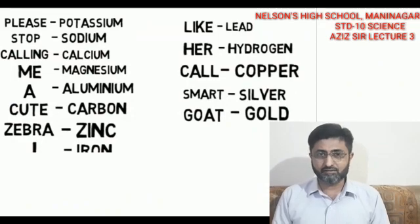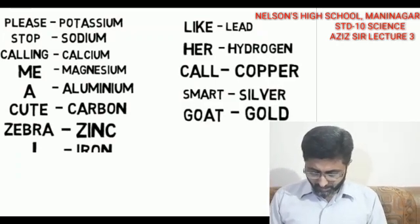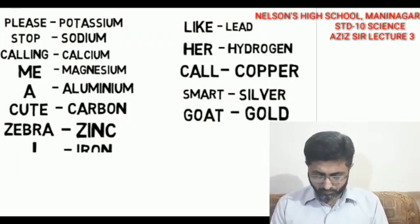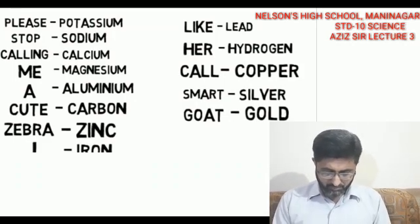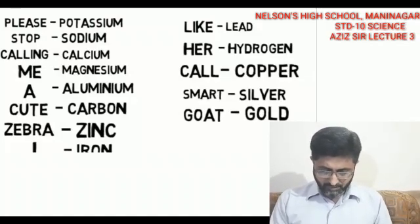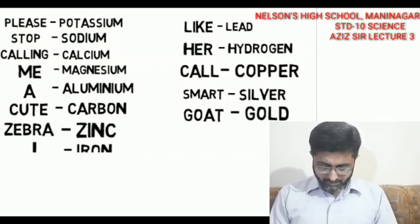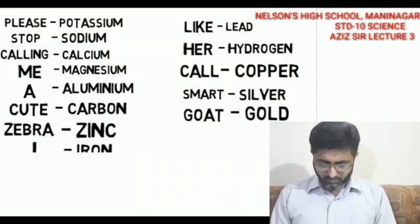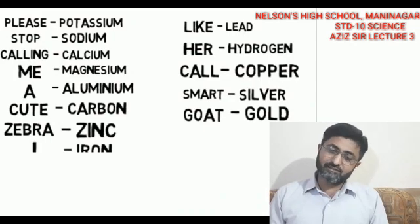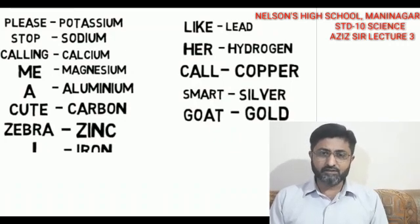To help memorize the reactivity series, here is a mnemonic rhyme: 'Please Stop Calling Me A Cute Zebra, I Like Her Called Smart Gold.' P = potassium, S = sodium, C = calcium, M = magnesium, A = aluminium, C = carbon, Z = zinc, I = iron, L = lead, H = hydrogen, C = copper, S = silver, G = gold. Learn this rhyme to remember the order easily.